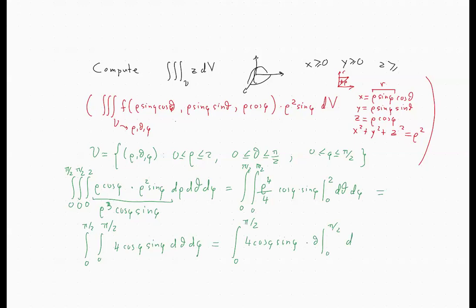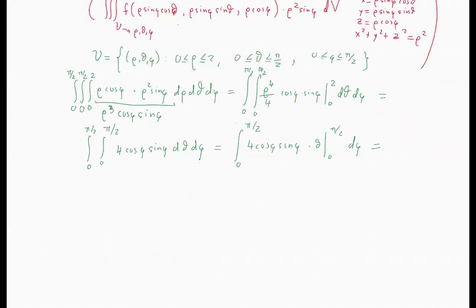This will simply be 0 to pi over 2, 4 cosine phi, sine phi times pi over 2 d phi. We can take the whole thing out and simplify to 2 pi. And we have the integral from 0 to pi over 2 of cosine phi, sine phi d phi.